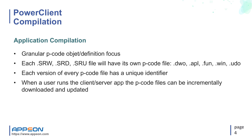The compilation with PowerClient is different from the traditional P-code approach. All PBD files are broken down very granularly into each individual object definition file. For example, each SRW, SRD, SRU, etc., would have its individual corresponding P-code file with new file extensions such as .DWO, .APL, .fun, .win, and .udo, instead of monolithic PBD files.